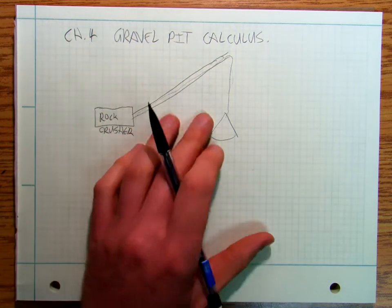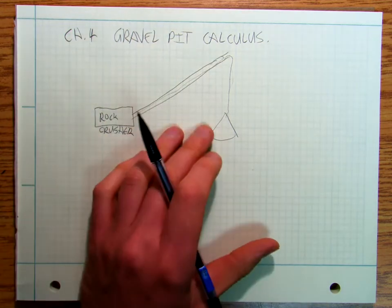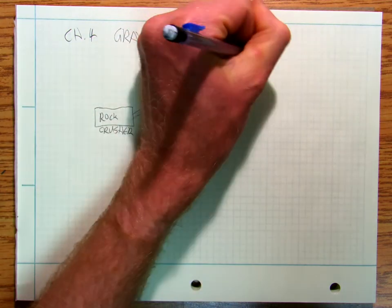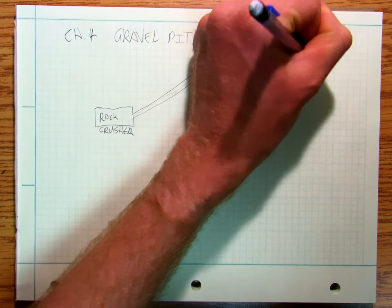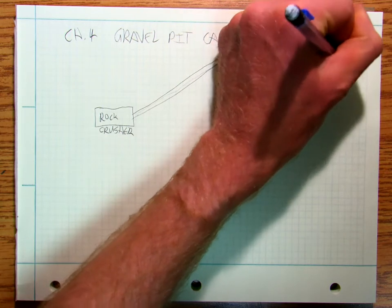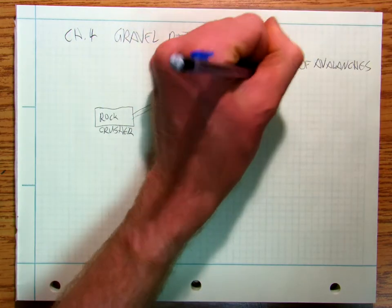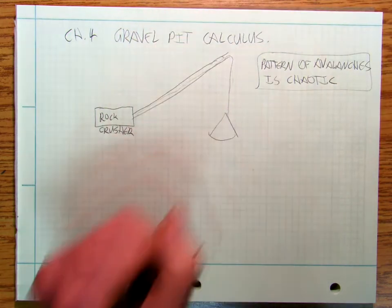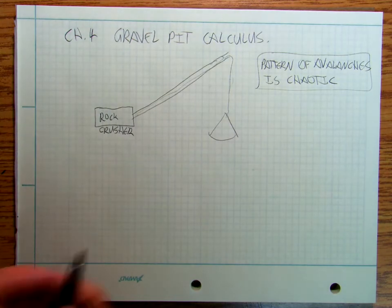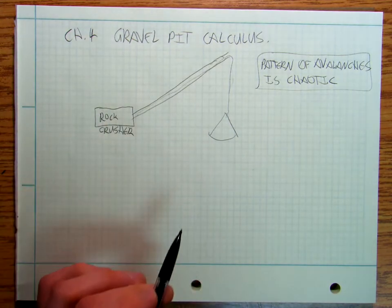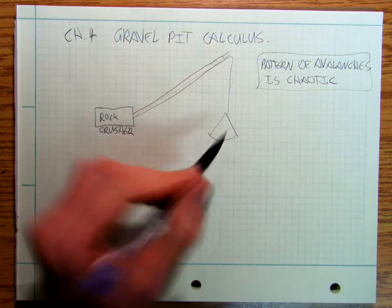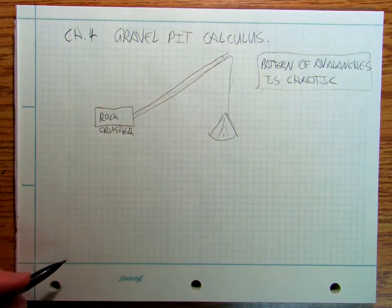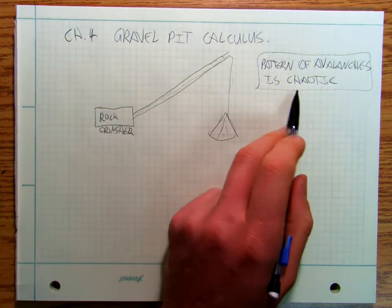but just an advanced thing for you to think about is that the pattern of the avalanches that the rock makes as it's sliding down the conical pile is chaotic. And that has a very specific definition and you can learn as much as you want about it and become an expert in rock crushing physics.